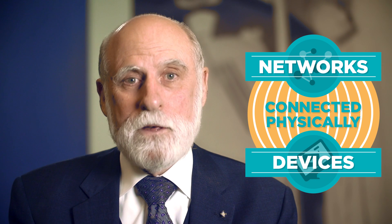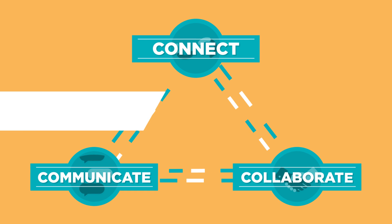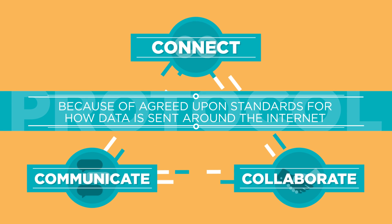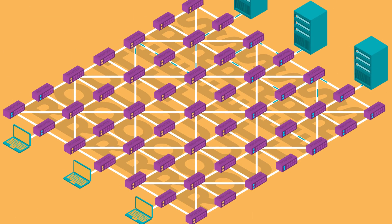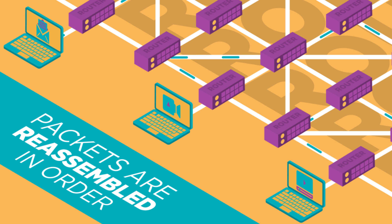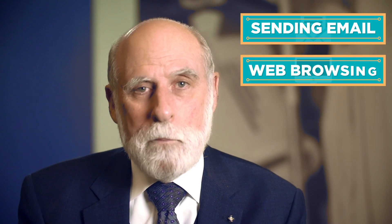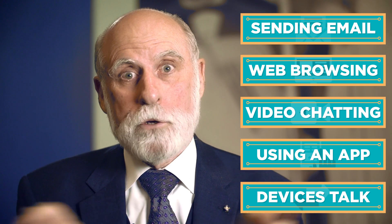The internet is made of hundreds of thousands of networks and billions of computers and devices connected physically. These different systems that make up the internet connect to each other, communicate with each other, and work together because of agreed-upon standards for how data is sent around on the internet. Computing devices or routers along the internet help all the packets make their way to the destination where they're reassembled, if necessary, in order. This happens billions of times a day whether you and others are sending an email, visiting a webpage, doing a video chat, using a mobile app, or when sensors or devices on the internet talk to each other.